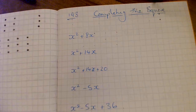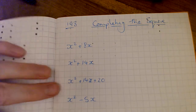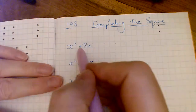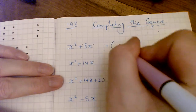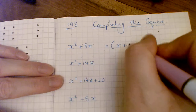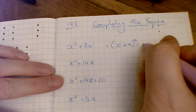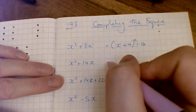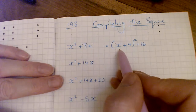Okay, so completing the square — this is task 193. First thing I do is write x plus half of 8, which is 4, squared, then take away that number squared: 4 times 4 is 16. And that's the end of that question — that's completing the square.